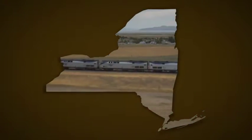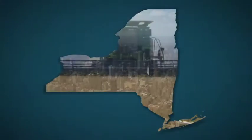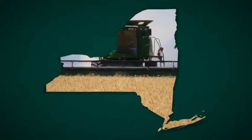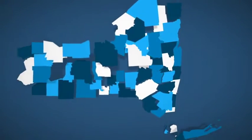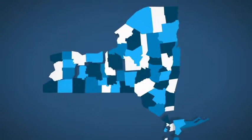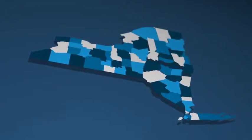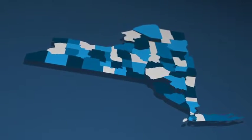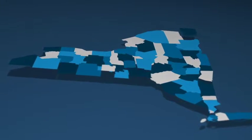Use your own content as a texture for the state map — images, footage, whatever you need. Highlight counties with different colors to represent whatever you need the map to represent. Or get creative and add your own animations and images into the texture layers.